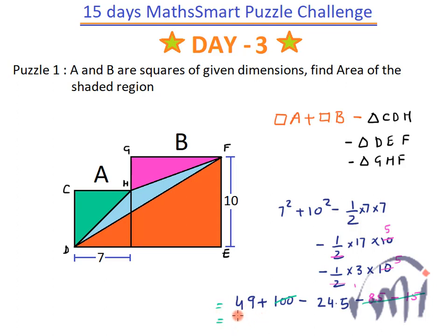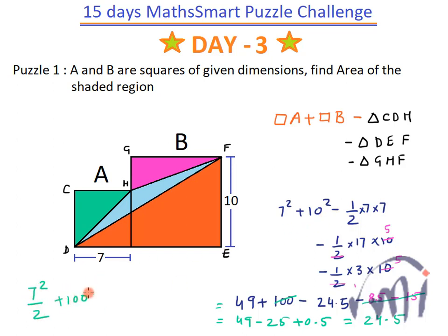So the area can be written as 49 minus 25 plus 0.5, so 49 minus 25 is 24, plus 0.5 is 24.5. There is another way of calculation which will save some time: we have 7 squared and here we have half of 7 squared, so 7 squared minus half of 7 squared is 7 squared by 2. And 10 squared is 100, which adds up to negative 100, so these two 100s cancel each other, leaving 49 by 2 which equals 24.5.